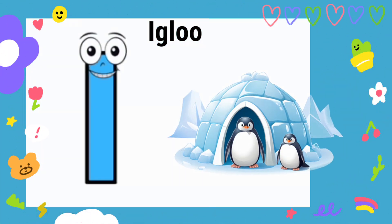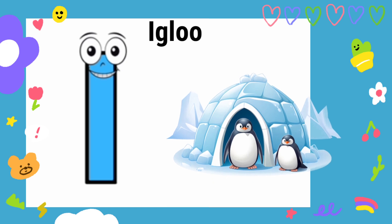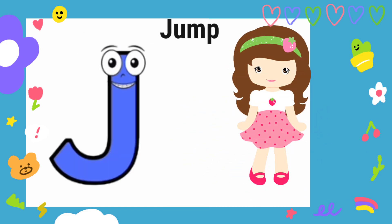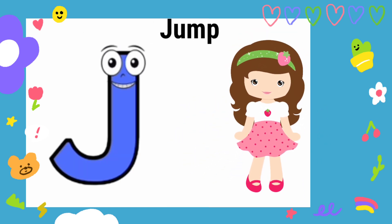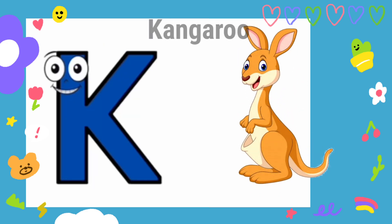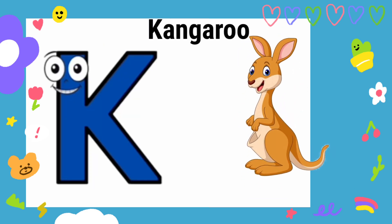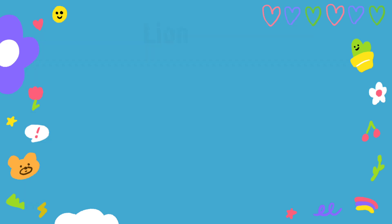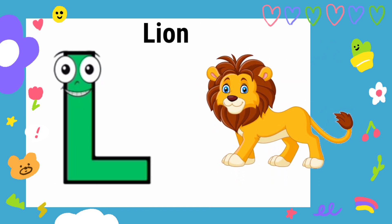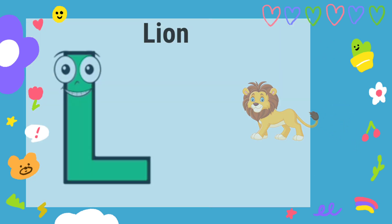I is for Igloo, I-I-Igloo. J is for Jump, J-J-Jump. K is for Kangaroo, K-K-Kangaroo. L is for Lion, L-L-Lion.